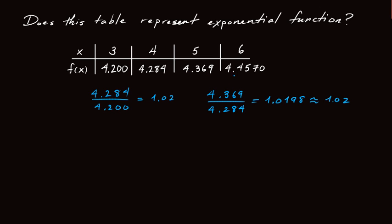Okay? Let's check the last pair here. So if we take 4.457 and divide by 4.369, you plug it into your calculator, you should get something like 1.0214, which again is very close to 1.02.